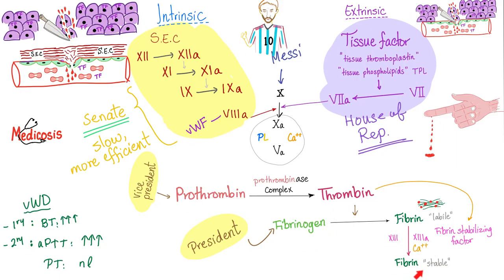Secondary hemostasis: take that fibrinogen and convert it to fibrin. To get fibrin, you need thrombin. Thrombin was inactive as prothrombin. To convert prothrombin to thrombin, you need the prothrombinase complex — a committee of four: factors 5 and 10, calcium, and phospholipid. Factor 10 is the most important. To activate it, there are two stories: extrinsic and intrinsic. The extrinsic pathway: tissue factor in the blood is evidence of injury. Tissue factor activates factor 7, which activates factor 10, converting prothrombin to thrombin and fibrinogen to fibrin — we have a clot.